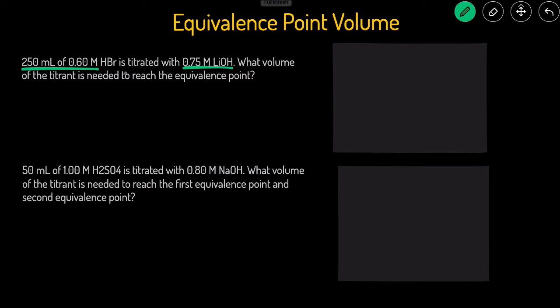To solve for the volume of the titrant that's needed to reach the equivalence point, we can just use the shortcut MAVA equals MBVB. Molarity of the acid times the volume of the acid equals molarity of base times volume of the base. Okay, let's plug it in.